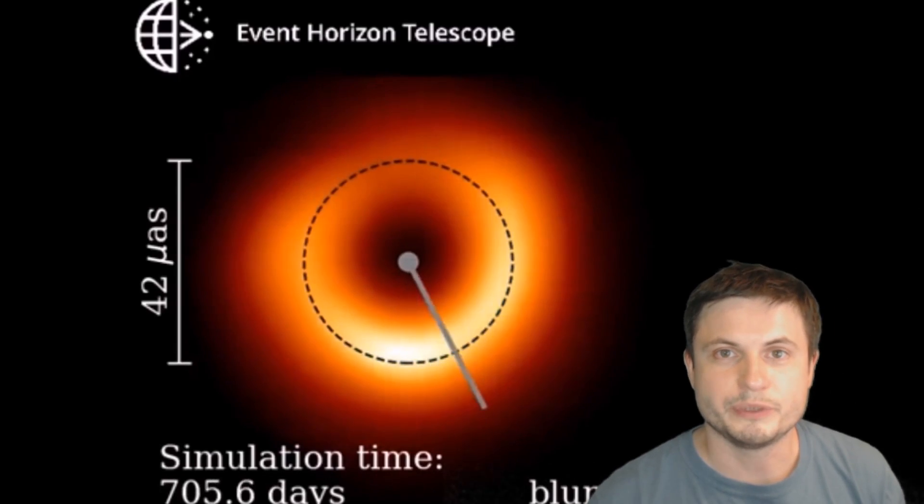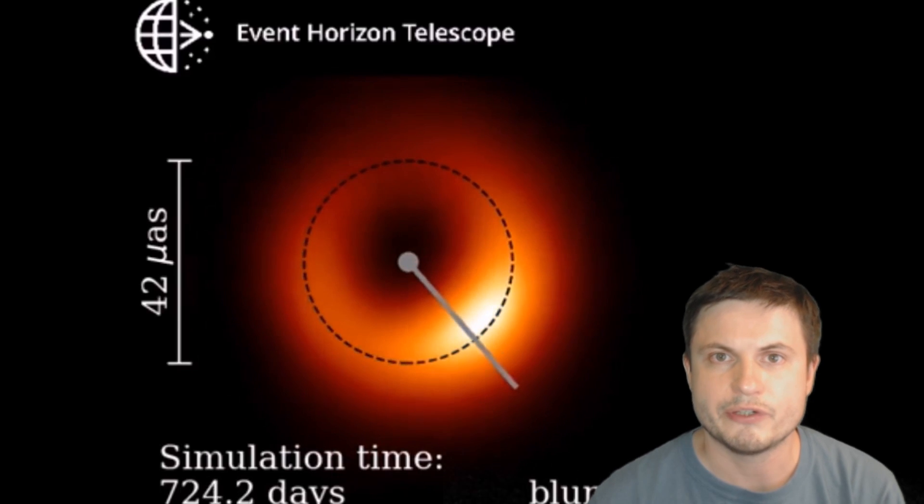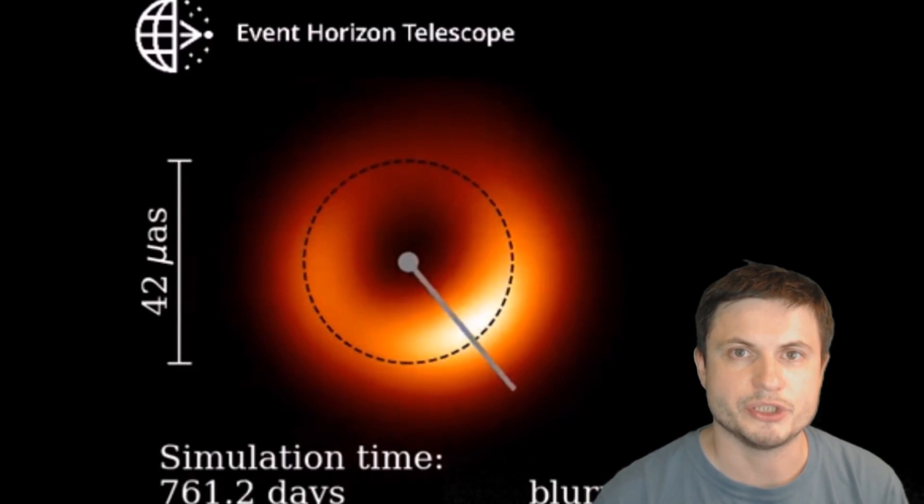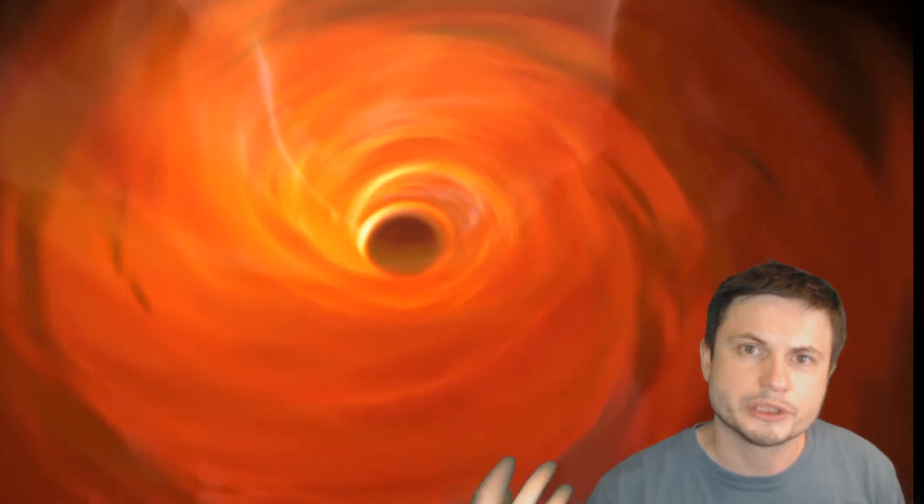But either way, right now, there's really no theory to explain why this variation happens and what's causing all of these changes in these images. A potential explanation does involve magnetic fields, which normally are formed when all of this ionized material starts circling around and creates extremely powerful magnetic fields, which could influence the actual motion of the accretion disk. But these are just guesses right now.